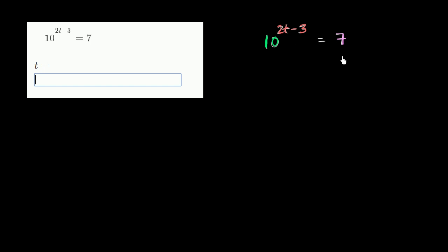So this is clearly an exponential form right over here. If we want to write it in logarithmic form, that will essentially allow us to solve for the exponent. So we could say this is the exact same truth about the universe as saying that the log base 10 of 7 is equal to 2t minus 3.